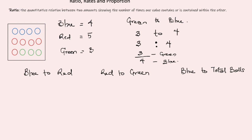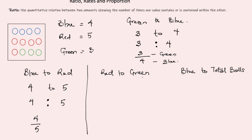So when you see ratios expressed as fractions, understand that both numbers represent totally different quantities. If we're asked to express the ratio of blue balls to red balls, blue is 4 and red is 5, so it's 4 to 5. For red to green balls: red is 5, green is 3, giving us 5 to 3, which can also be expressed as 5 over 3.